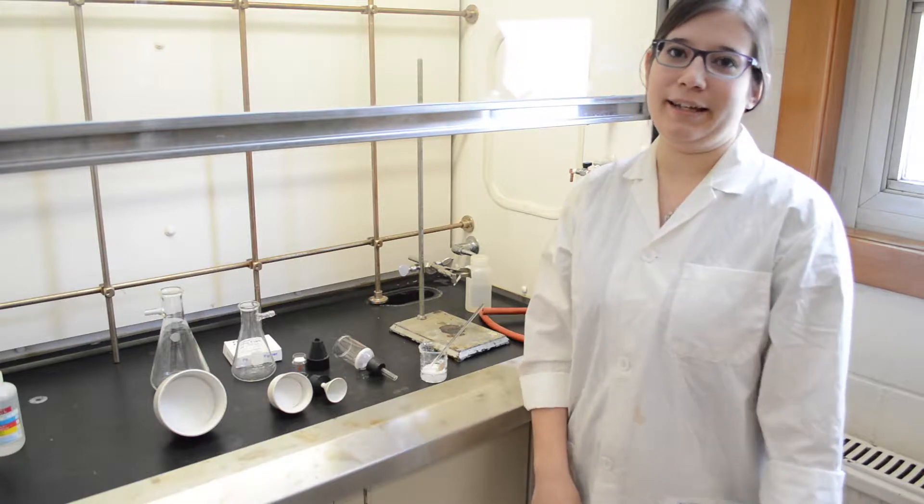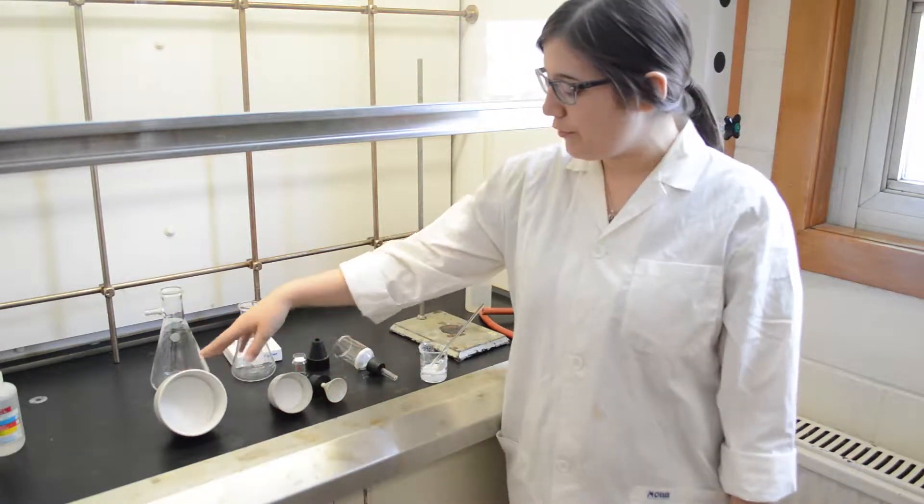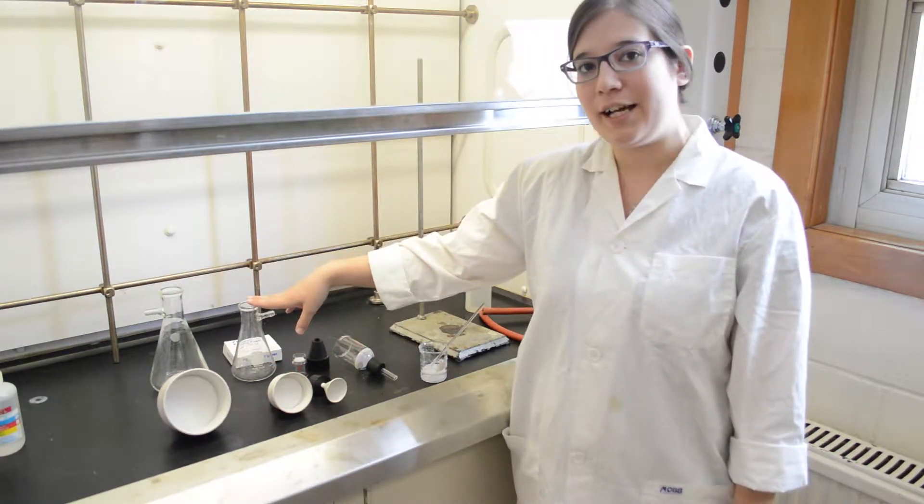Suction filtration in the organic labs can be done with many different types of equipment. We have large Buschner funnels and small Buschner funnels which must be used with 500 and 250 milliliter filter flasks respectively.